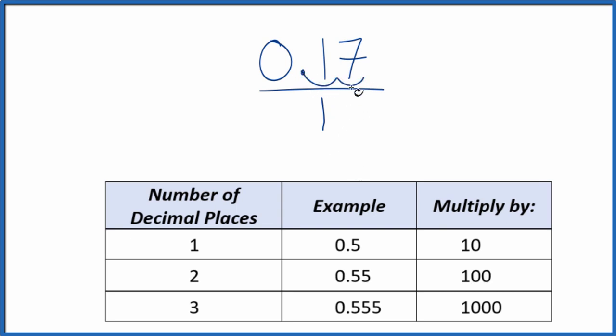Next, since we have two decimal places, we're going to multiply the numerator here by 100, and that'll give us a whole number.